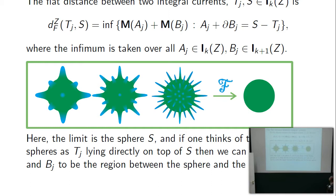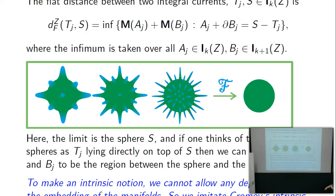The flat distance between two integral currents is the infimum of the two masses such that A plus boundary B equals S minus T. For bumpy spheres, the TJ's lie directly on top of the sphere S, no AJ is needed, and BJ is the thin region between the spikes — a region of small volume. To make an intrinsic notion, we can't allow any dependence on the embedding of the manifolds. So we imitate Gromov's intrinsic Hausdorff distance: take the infimum over all isometric embeddings into all possible complete metric spaces Z.